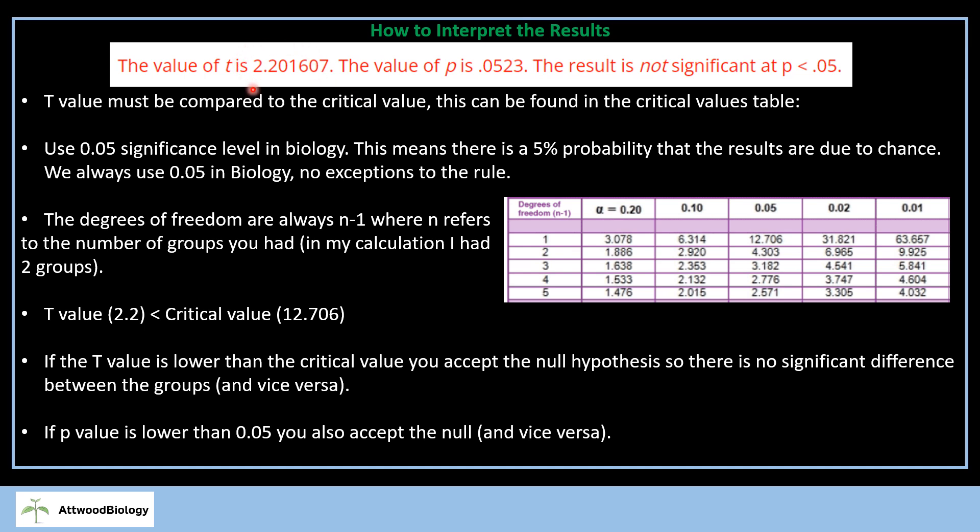So my T-value up here, you can see, is 2.2. The critical value is 12.706. So you can see here, we're comparing them. I can see that my T-value is smaller than the critical value.